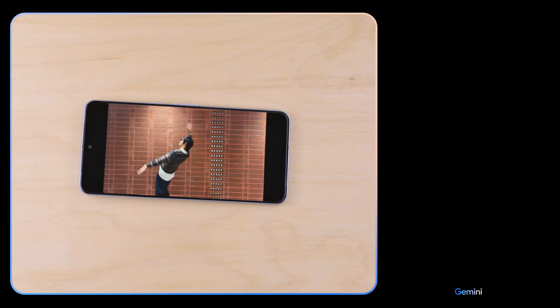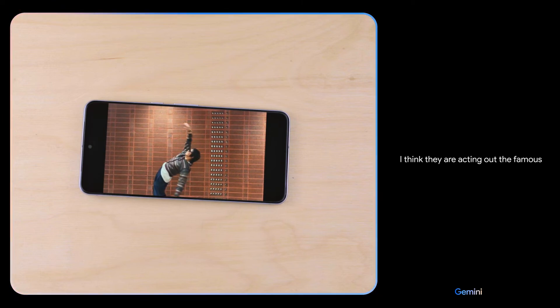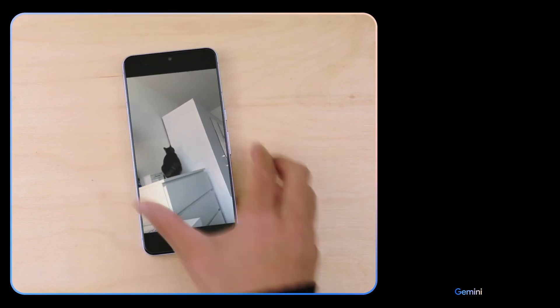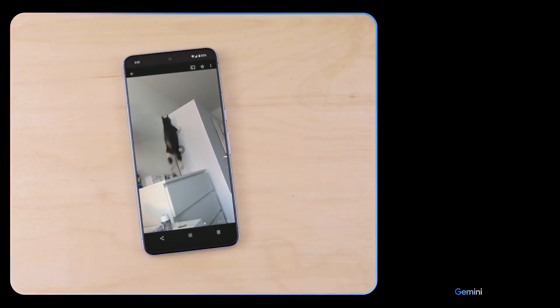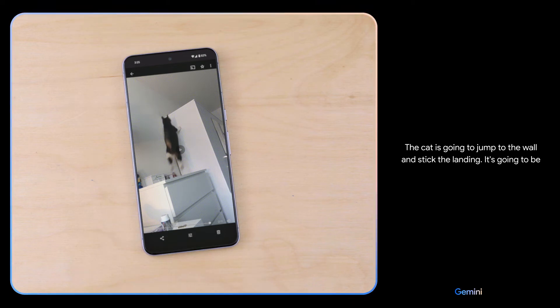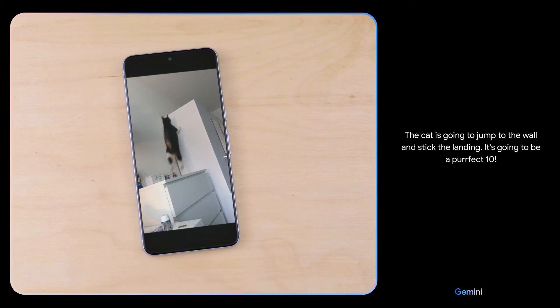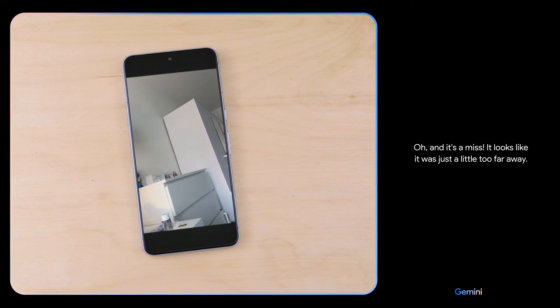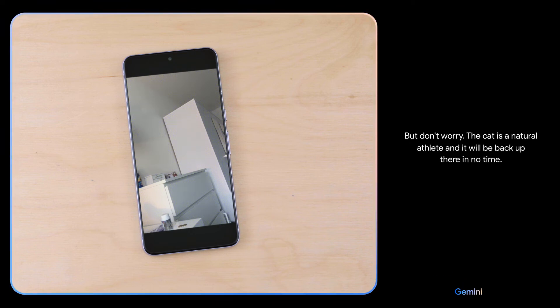All right, I see you've added a palm tree to the drawing. Change it up with some beachy vibes. What movie are they acting out here? I think they are acting out the famous bullet time scene from The Matrix. Oh, nice. What do you think might happen next? The cat is going to jump to the wall and stick the landing. It's going to be a perfect 10. Oh, and it's a miss. It looks like it was just a little too far away. But don't worry, the cat is a natural athlete and it will be back up there in no time.